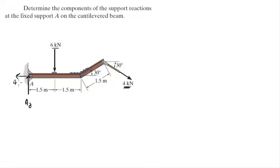And you know that this 6K and this 4K are creating somewhat of a clockwise moment. Therefore, the reaction is going to be a counterclockwise moment. So these are the reactions at A, and we're going to find them.